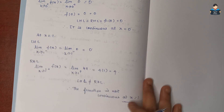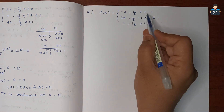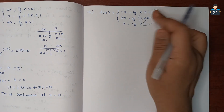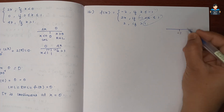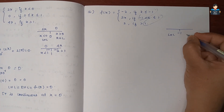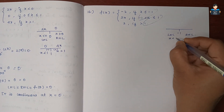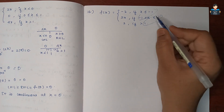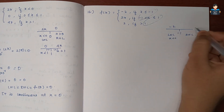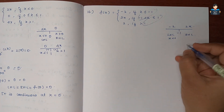Question Number 16: f(x) = -2 for x less than or equal to -1; 2x for -1 < x ≤ 1; and 2 for x greater than 1. There are two critical points: x = -1 and x = 1. We check LHL and RHL at each point. For x = -1: x less than -1 uses -2, and x greater than -1 uses 2x.